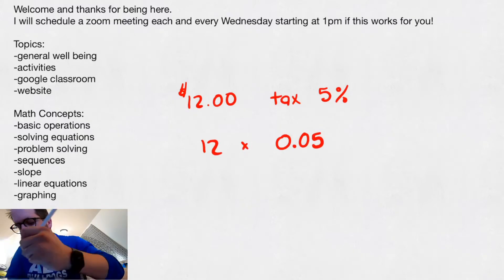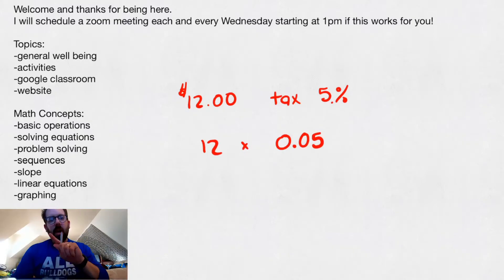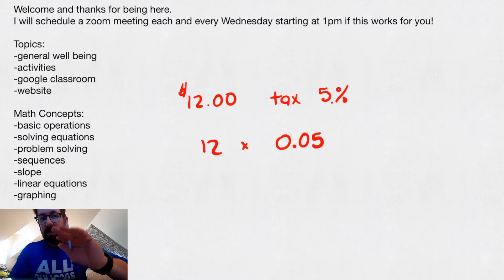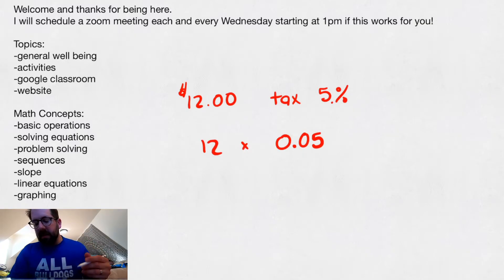You always have to move the decimal over two spots. Currently, the decimal is behind the 5. You move it over two spots when it's a percent to make it a decimal, because decimals are numbers we use. So I moved it over two spots, no matter what the number is. If it's a percent, you always move it over two spots. If it's 12%, move it over two spots. So in my case, it's 0.05, and we're going to multiply that on.